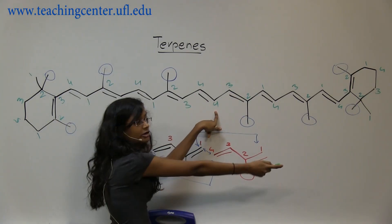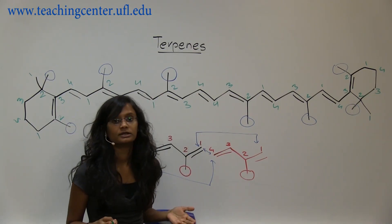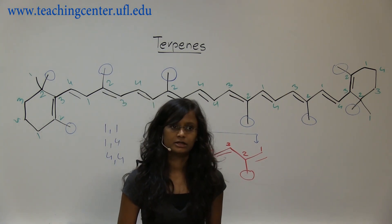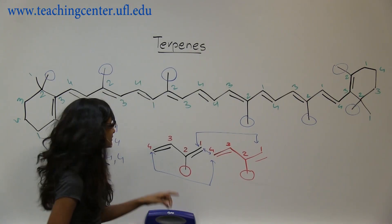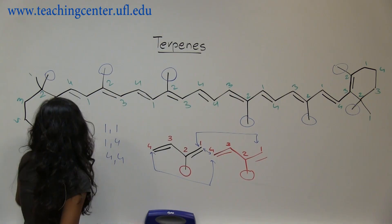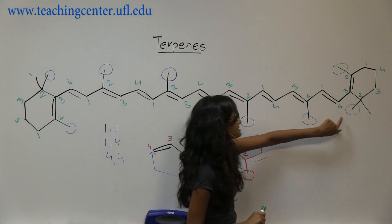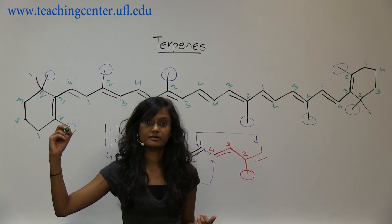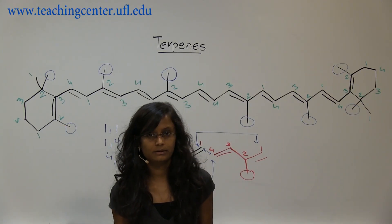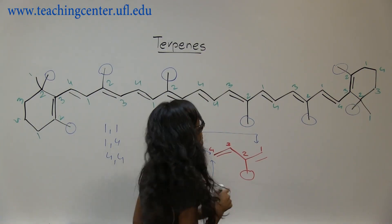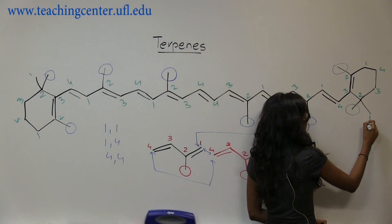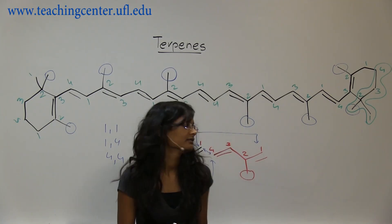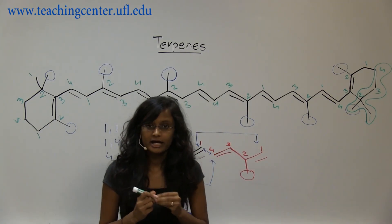Now all you have to do is count your methyls, and that tells you how many isoprene units there are, because each isoprene unit has one methyl. Let's count the circles: one, two, three, four, five, six, seven, eight — so there are eight isoprene units. Sometimes the instructor tells you to number them, and sometimes you circle the entire isoprene unit for the whole molecule.